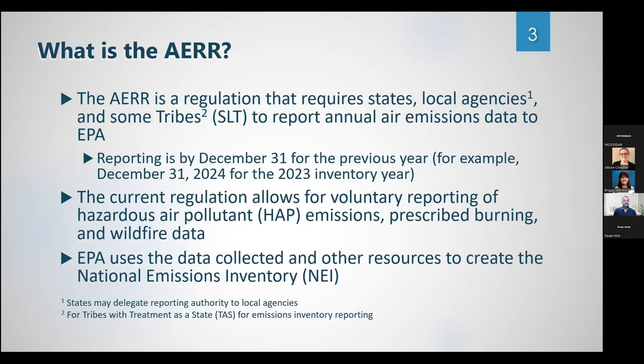In case you are not familiar with the air emissions reporting rule, it's currently a regulation that requires states, locals, and some tribes — or SLTs — to report their annual air emissions data to EPA. Right now, under the current rule, reporting is due by December 31st for the previous year. The current regulation allows for voluntary reporting of hazardous air pollutants, or HAP, prescribed burning and wildfire data, and requires reporting of criteria pollutants. We use this data, along with other resources, to create the National Emissions Inventory, or NEI.